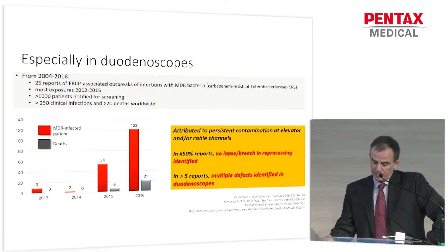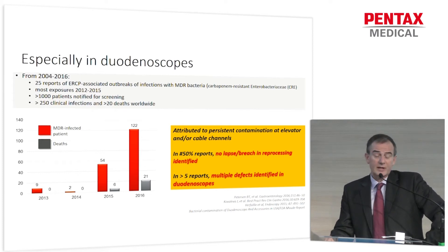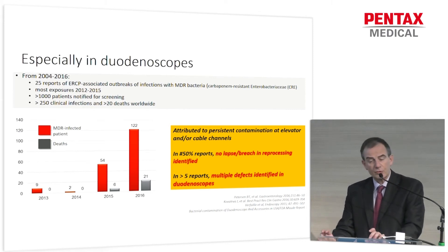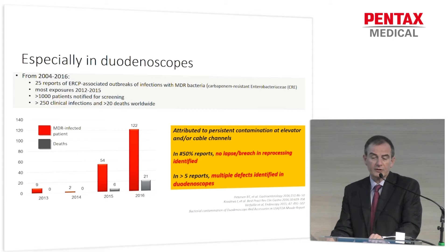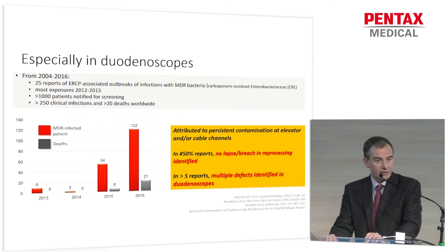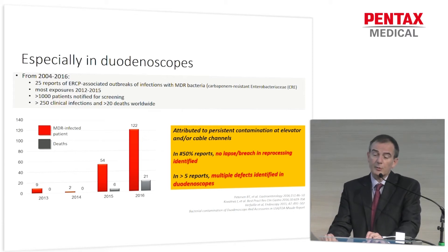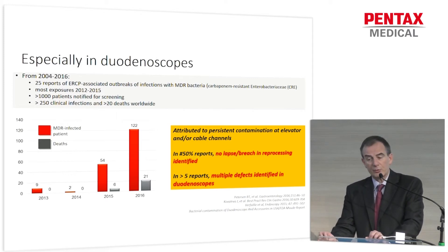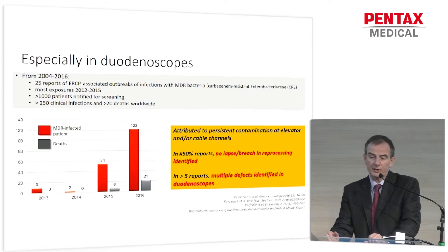For our topic today, most of these recent outbreaks were due to duodenoscopes. From 2004 to 2016, 25 reports of ERCP-associated outbreaks of infections with multidrug-resistant bacteria — especially carbapenem-resistant bacteria — were published, with more than 1,000 patients notified for screening, more than 250 clinical infections, and more than 20 deaths worldwide, as represented in this graph. Most outbreaks were attributed to persistent contamination at the elevator or cable channels.